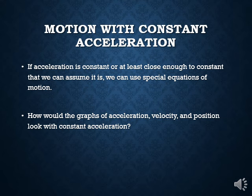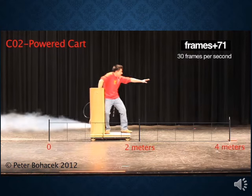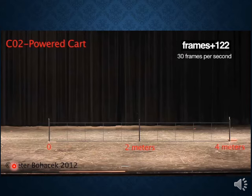Now we'll talk about constant acceleration. If acceleration is constant, or close enough that we can assume it is, we can use special equations of motion. Before getting into those, we want to think about what the graphs of acceleration, velocity, and position versus time would look like with constant acceleration. We have a short video of constant acceleration so we can see what that might look like.